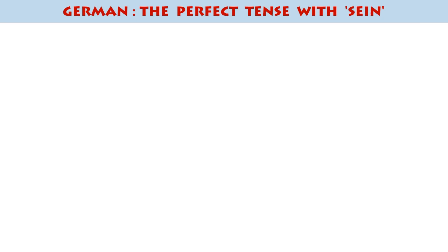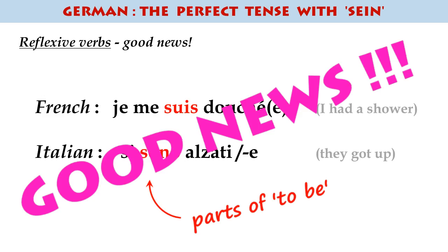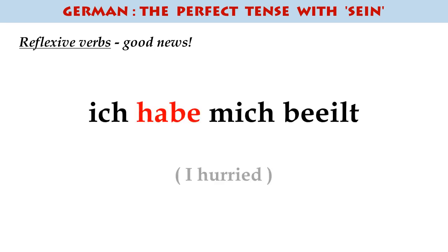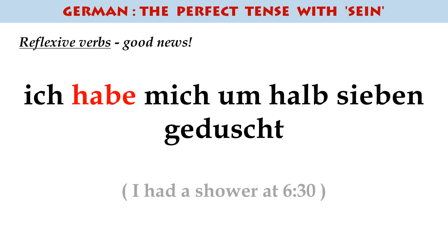One point to make here as well: if you study French or Italian, some of the reflexive verbs you encounter take être in French — they are être verbs, so they use the verb 'to be'. That's not the case in German. German just continues to use haben. So 'I hurried somewhere' is ich habe mich beeilt, and 'I showered at half past six' is ich habe mich um halb sieben geduscht — with ich habe, not ich bin.